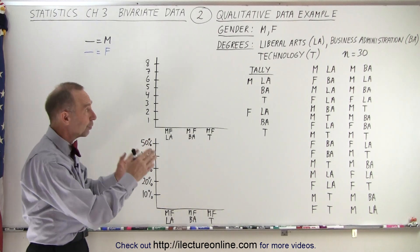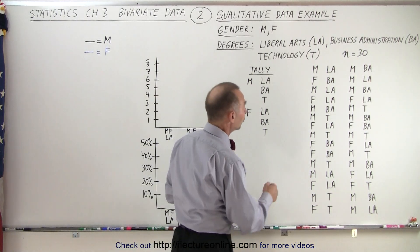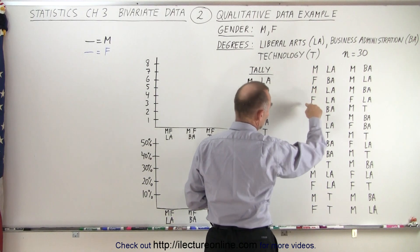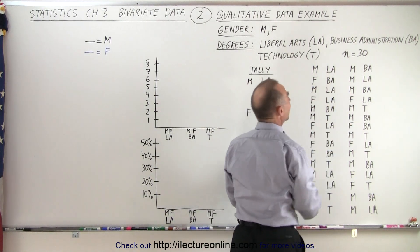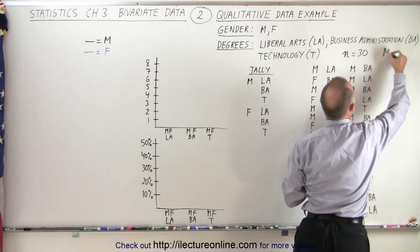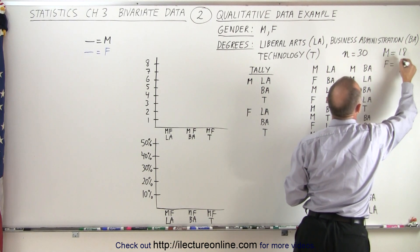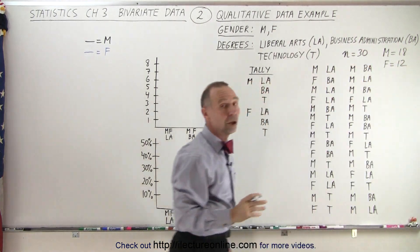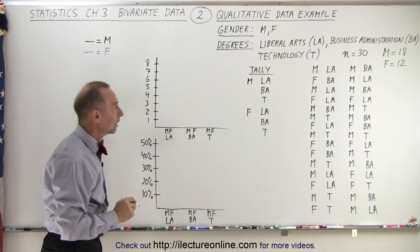We have a sample of 30 students. And let's see how many of those 30 students are male. We have one, two, three... 18 male. So male equals 18. That means there should be 12 females because of a total of 30 data points.